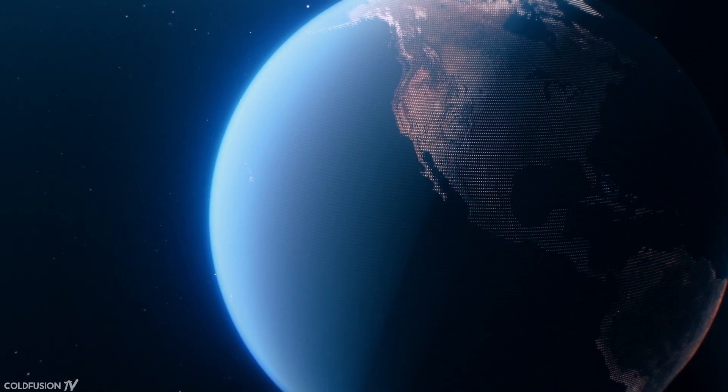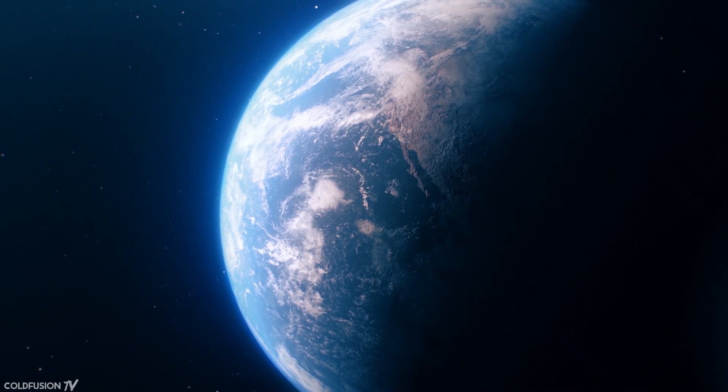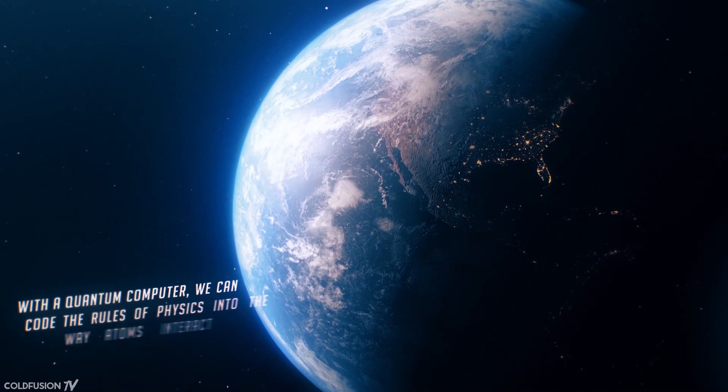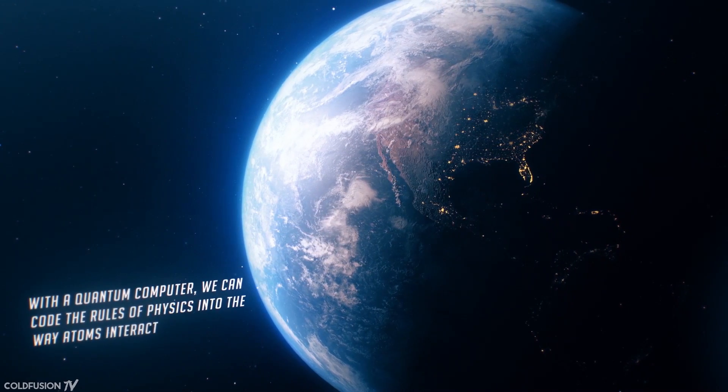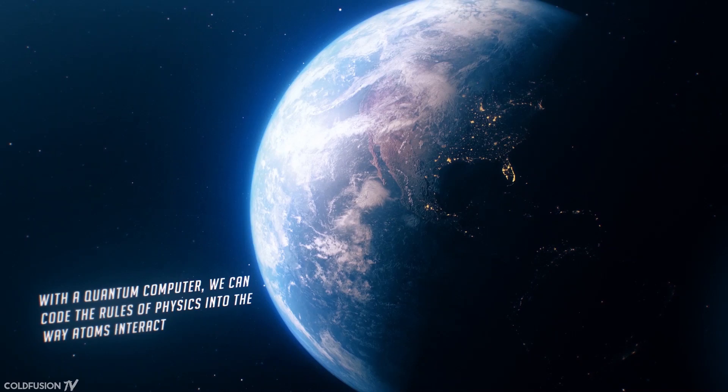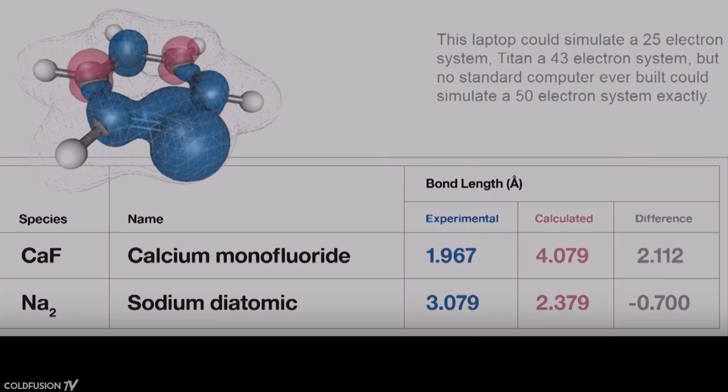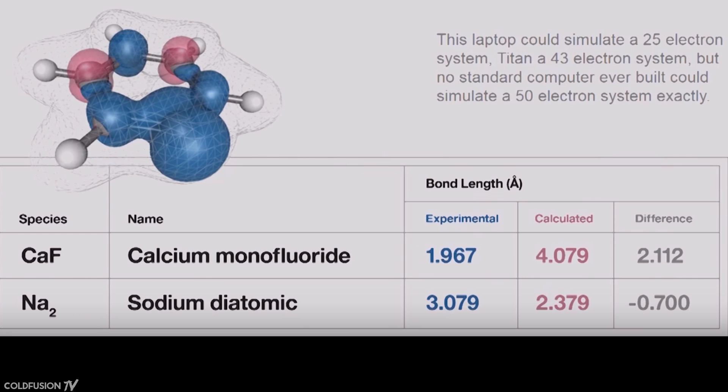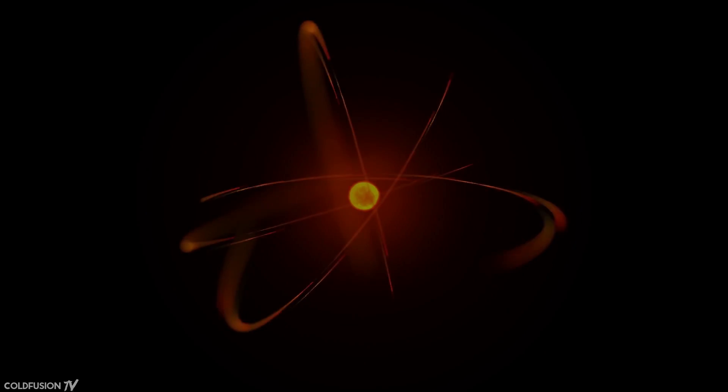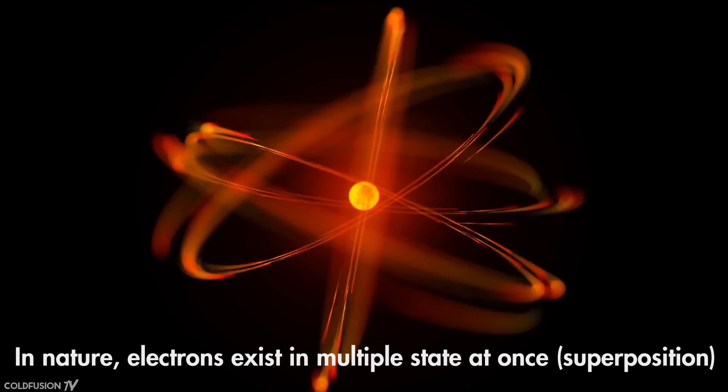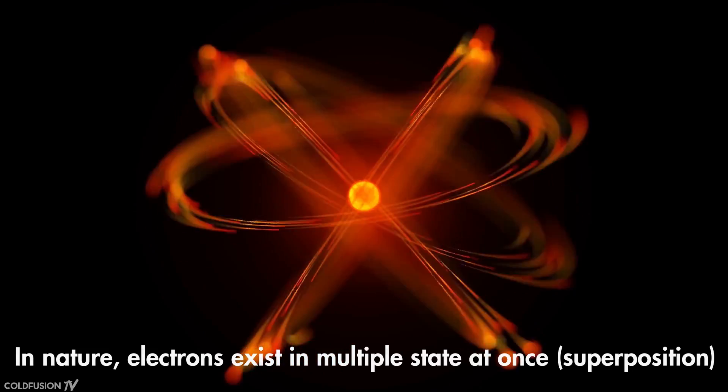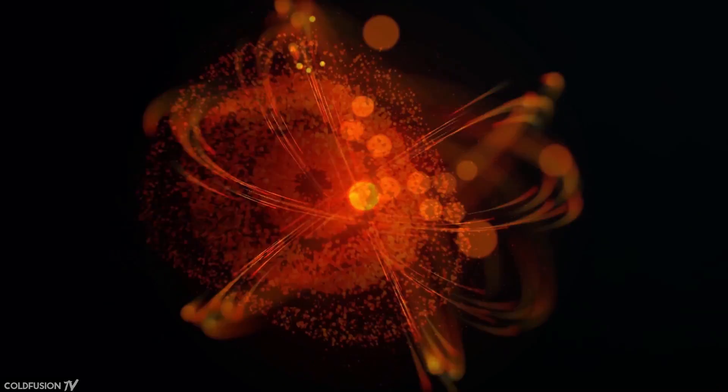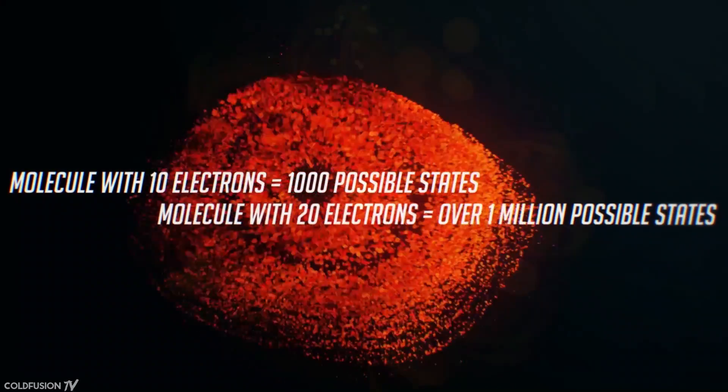So I just want to solidify why the superposition aspect is so important. As I said in the last video, our world and reality itself is quantum in nature. Real world quantum systems can't be modeled on a classical computer without making poor approximations. For the two simple molecules in this example here, a classical computer is off by a factor of 70 to 200%. Think about it. Modeling such a simple compound as calcium monofluoride makes our best supercomputers completely useless. Our current machines are so inaccurate because the electrons in the real world that are orbiting around these atoms are themselves in superposition. These electrons exist in multiple states at once and we can't model that properly with classical computers. Calculating all the possibilities is just too much for them.